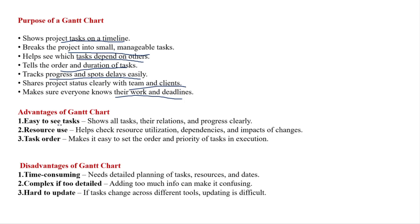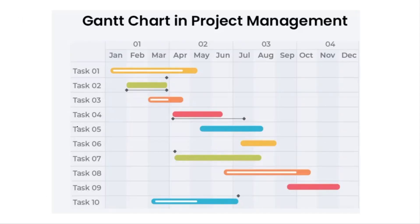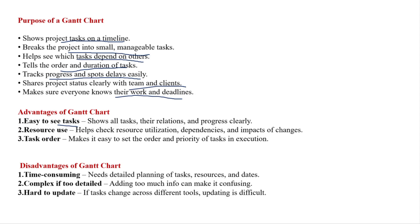Advantages of the Gantt chart: it is easy to see tasks — tasks are shown in a simple visual sequence. You can clearly see task order, for example first task 4, then task 5, and so on.